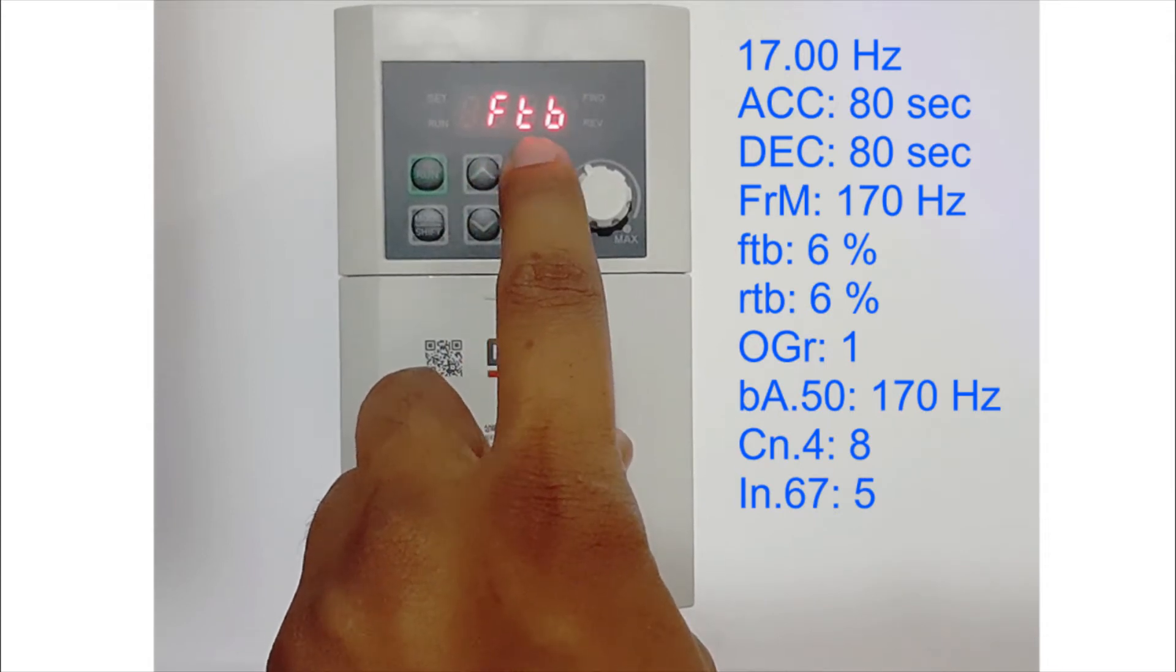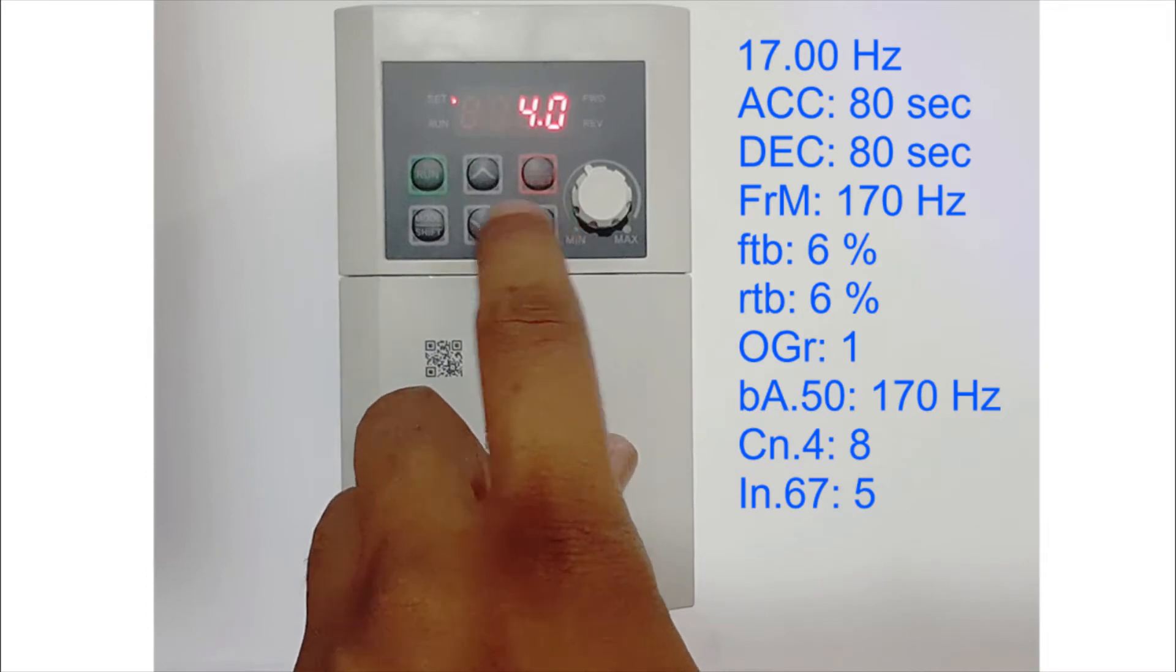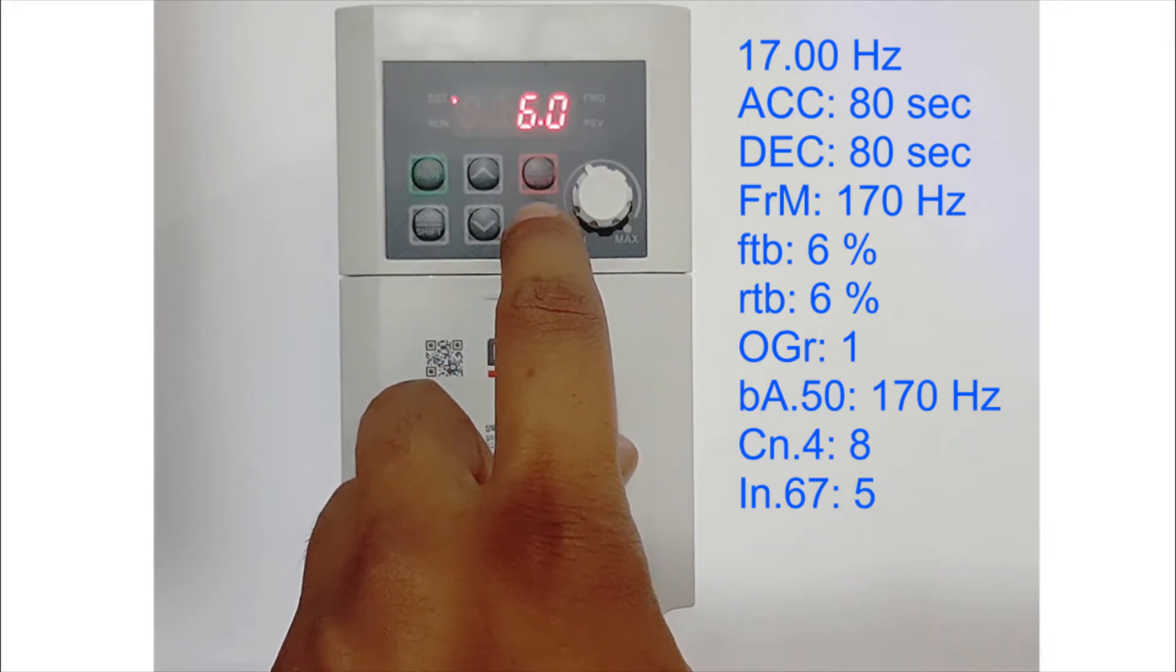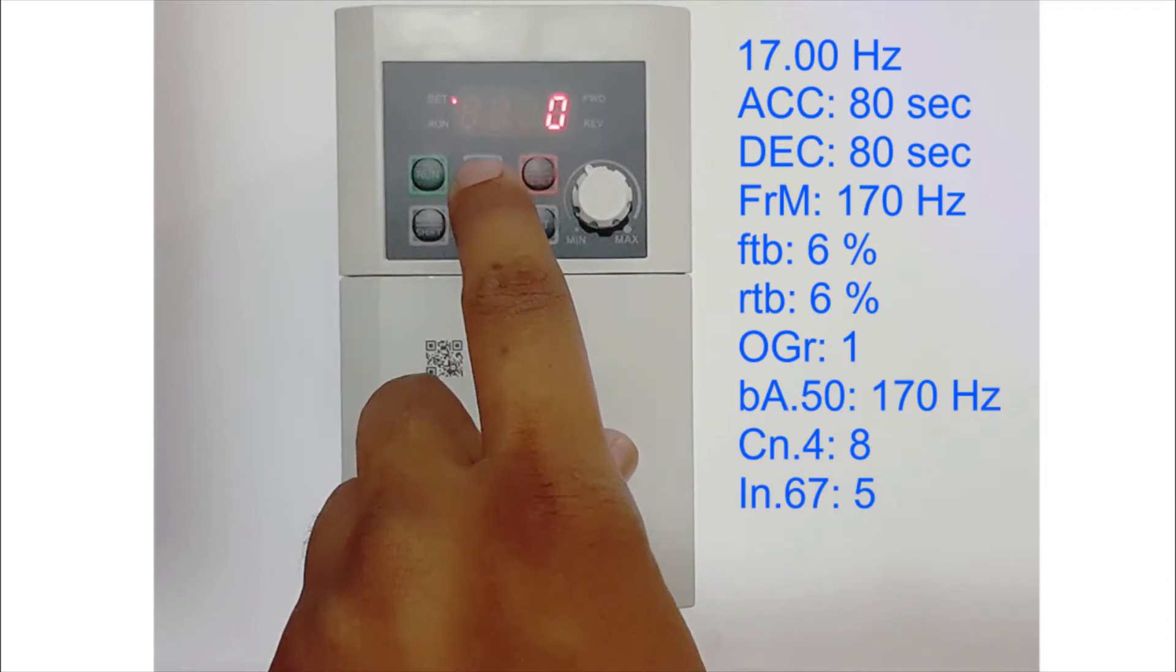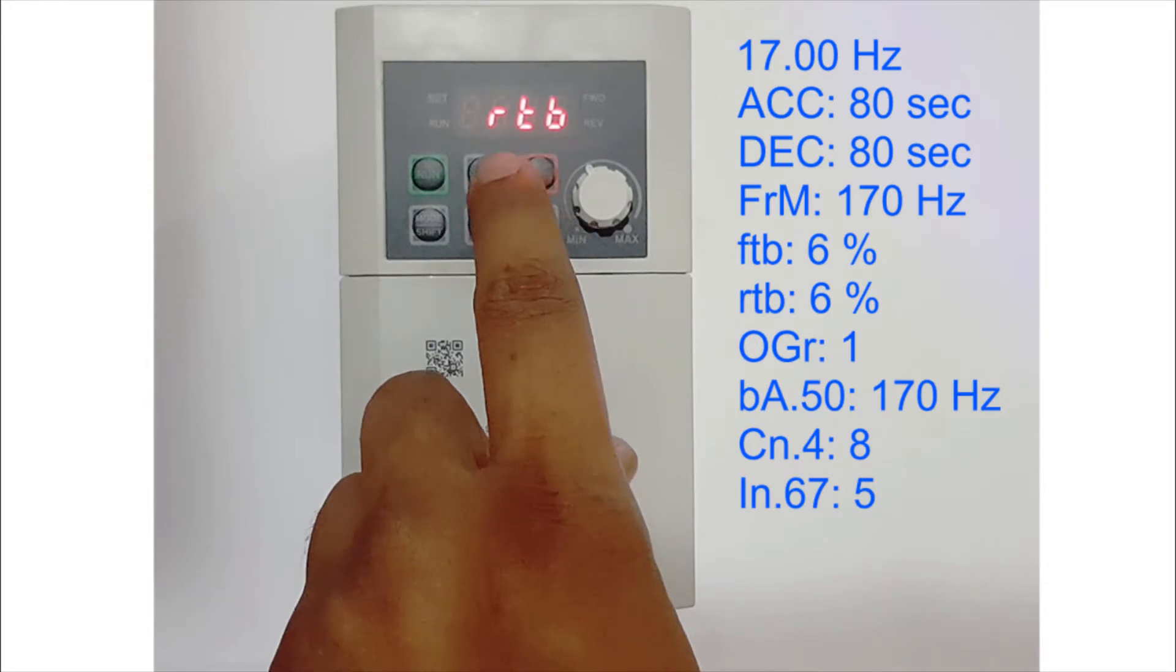This is for the forward torque boost and this is the reverse torque boost. I will keep both torque boost at 6% and press Enter two times. Reverse torque boost also 6%. At OGR I will make it one and press Shift repeatedly.